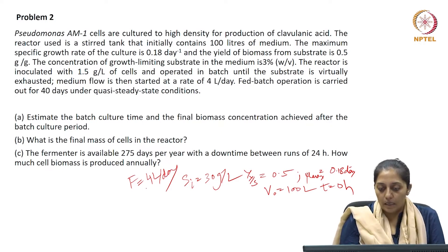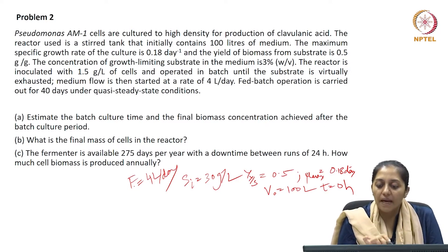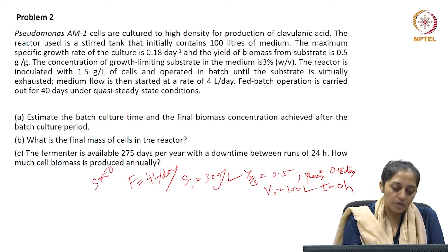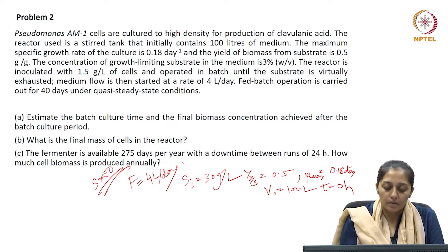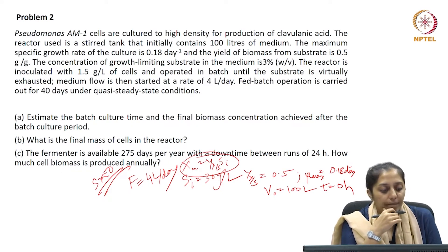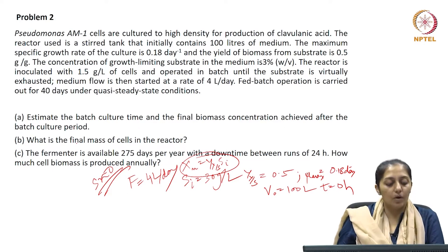When we convert the batch to fed batch, when nearly S equals 0, at this point X max equals Yx/s times Si. This is the biomass concentration which is continued for another 40 days. The question asks us to estimate the batch culture time and the final biomass concentration achieved at the end of the batch culture period.